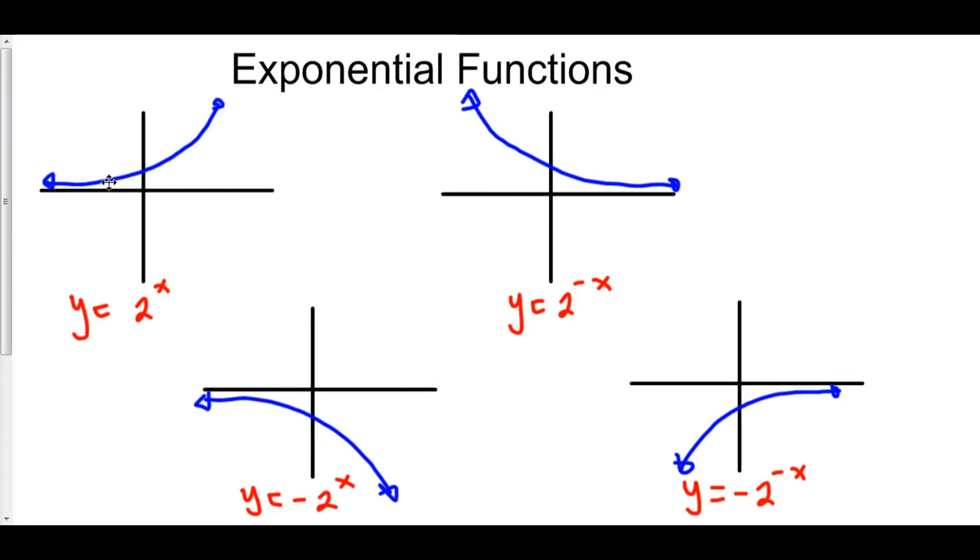Now, as x approaches negative infinity, this graph is approaching the x-axis, approaching 0. Meanwhile, when x approaches positive infinity, this graph, we say, diverges to infinity.